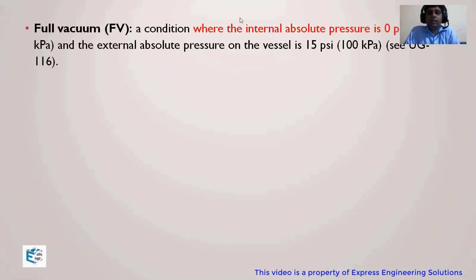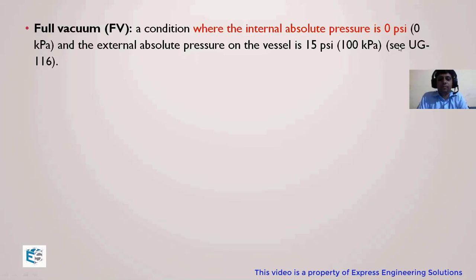Now we are going to see one more very important definition — that is the definition of full vacuum. What do you mean by full vacuum? As we all know, vacuum means there is nothing. If we go outside the Earth's atmosphere, we can see that there is vacuum, meaning there is no atmospheric pressure, no atmosphere, no gases. So when can this condition occur in your pressure vessel?